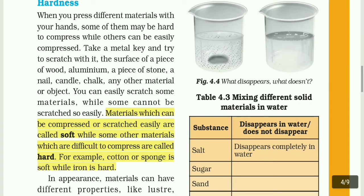The materials which can be compressed or scratched easily are called soft, while some other materials which are difficult to compress are called hard. For example, cotton or sponge is soft, while iron is hard.